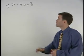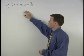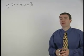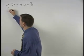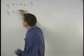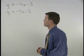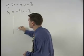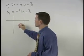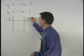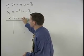To graph the inequality y is greater than negative 4x minus 3, we start by graphing what is called the boundary line. And in this case, that's y equals negative 4x minus 3. So setting up our chart, we have our x's, our y's, and negative 4x minus 3.